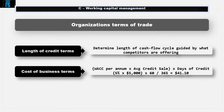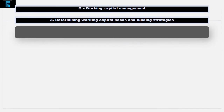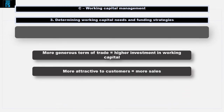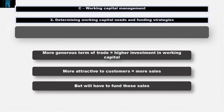Companies could look at how much it would cost them for say 30 days or 40 days and compare. Armed with this information, the organisation can evaluate different terms of trade and their cost benefit — i.e. the cost of financing them versus the potential sales lost by changing these terms. The more generous the terms of trade are, the higher the investment in working capital will be. This will be a trade-off for the organisation, as the more generous the terms of trade, the more attractive they are to customers resulting in more sales, but they will have to fund these sales.